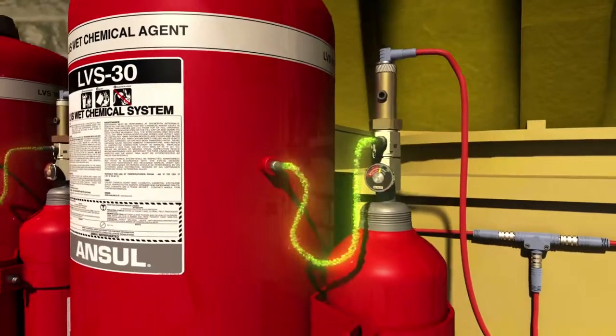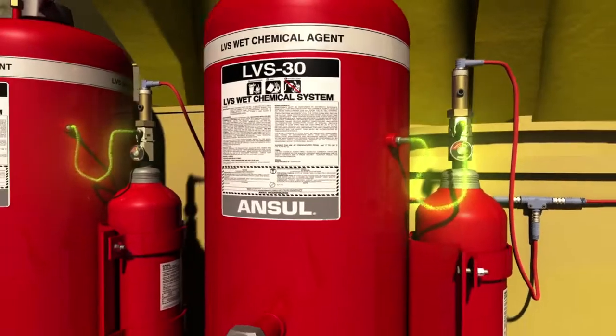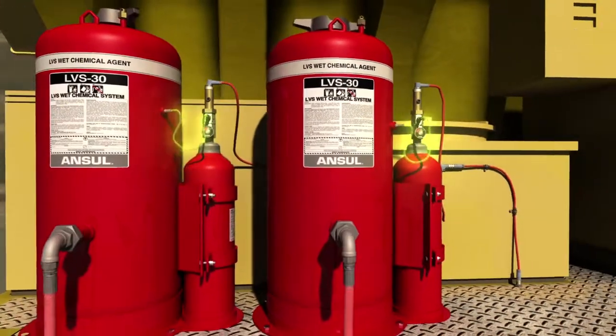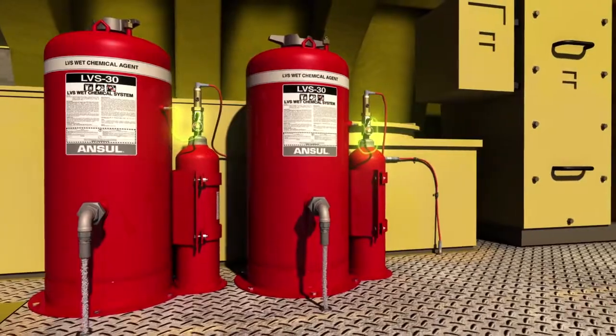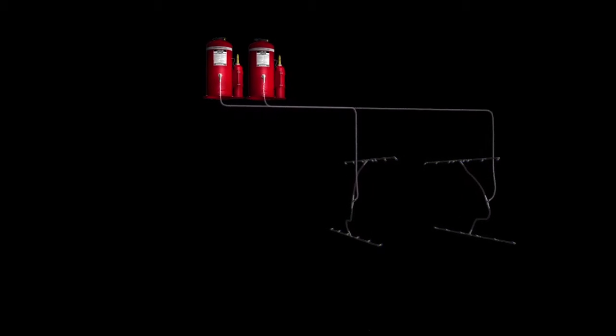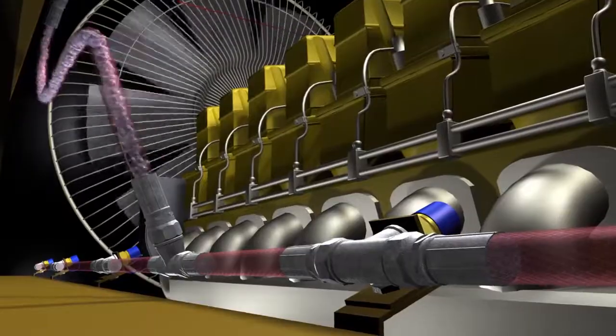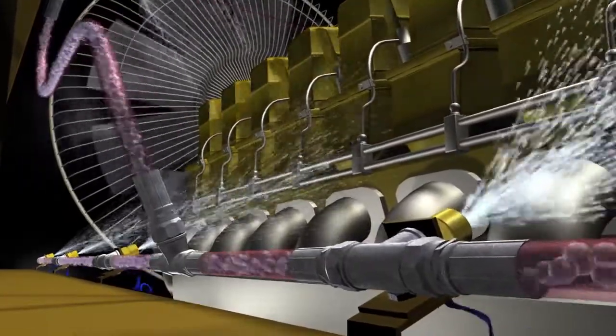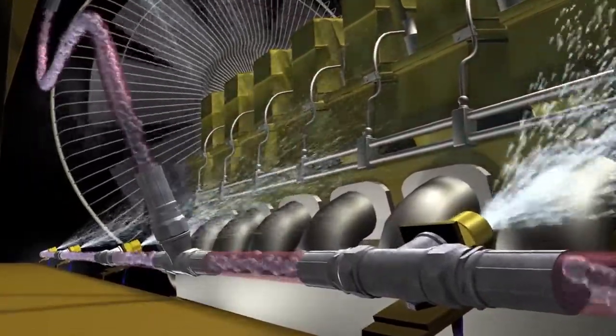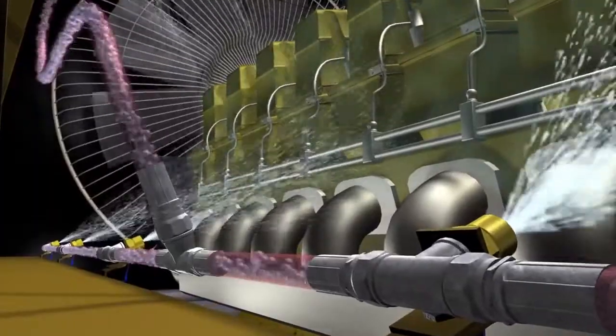When sufficient pressure is reached within the agent tank, the sealed burst disk assembly ruptures to release the LVS liquid agent. The LVS liquid agent is distributed throughout the hose network to nozzles designed to cover specific hazard areas. The agent is then released under constant pressure for the duration of the discharge. It quickly floods the protected area to suppress the fire and simultaneously cool the hazard to help prevent fire reflash.